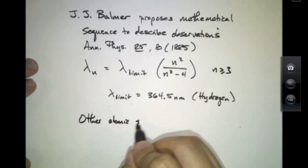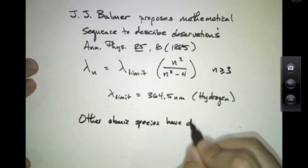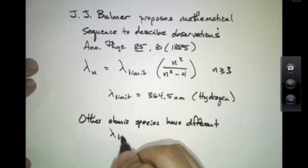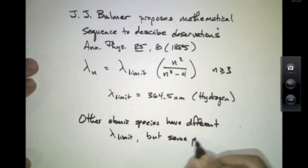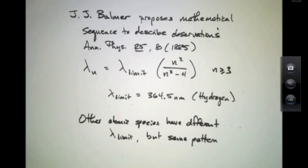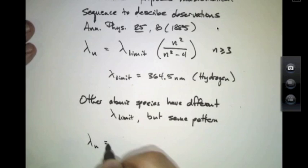But other atomic species have a different lambda limit. It's the same pattern. And it has to be said that actually, eventually, there are other sequences of light emission like this. And so this formula had to be generalized.